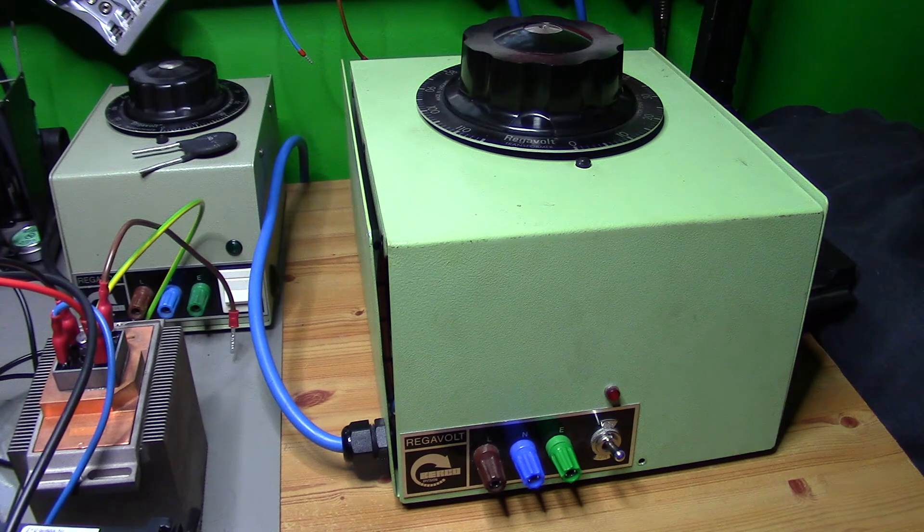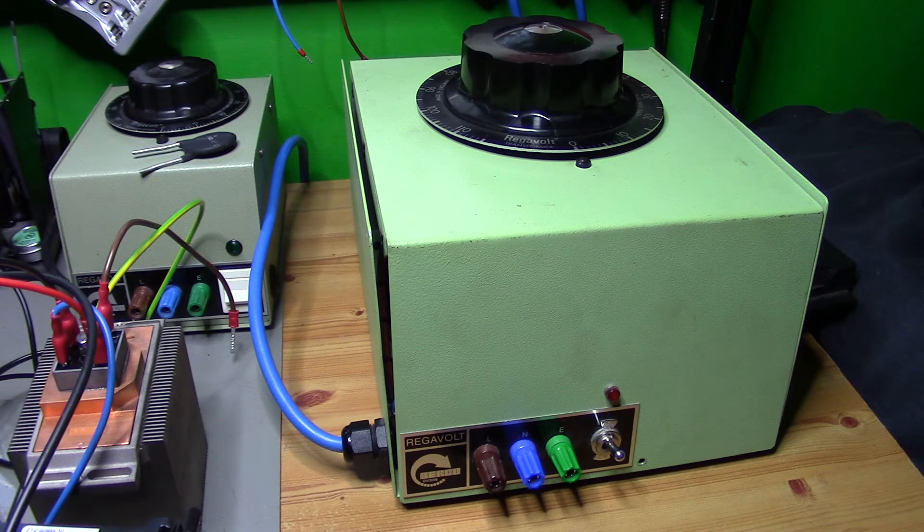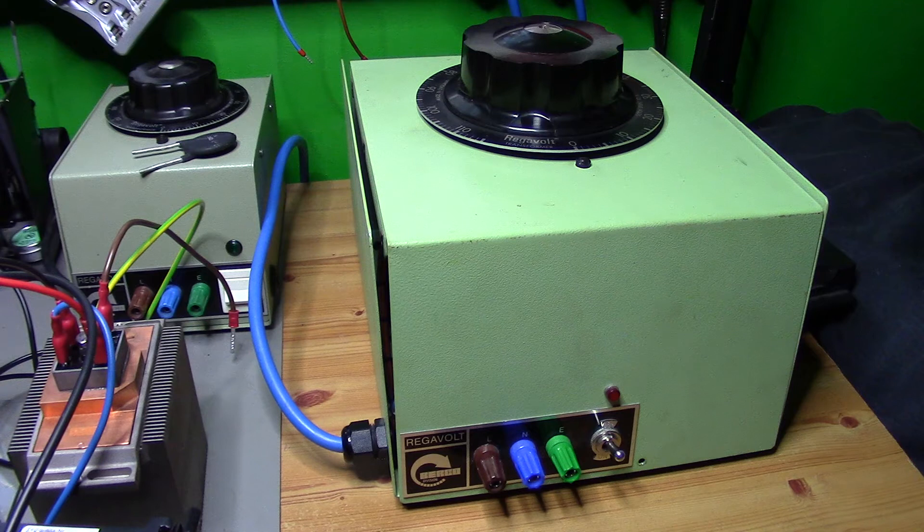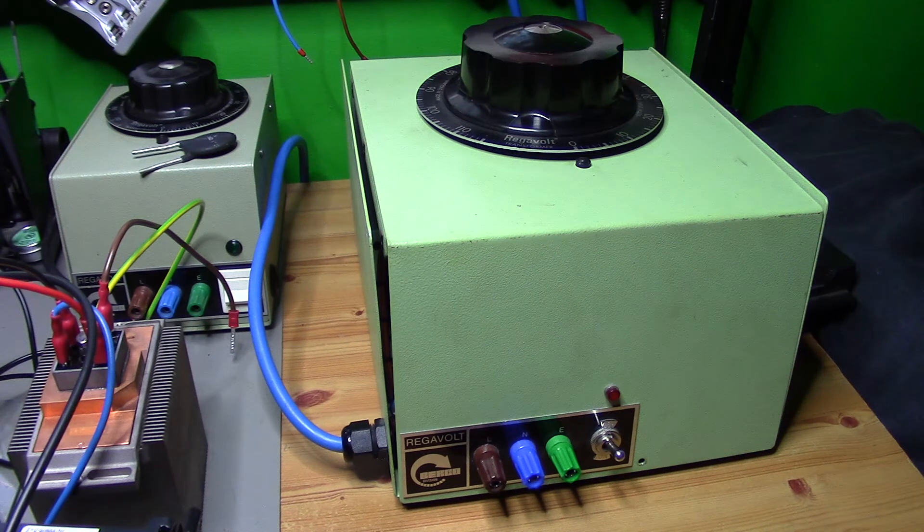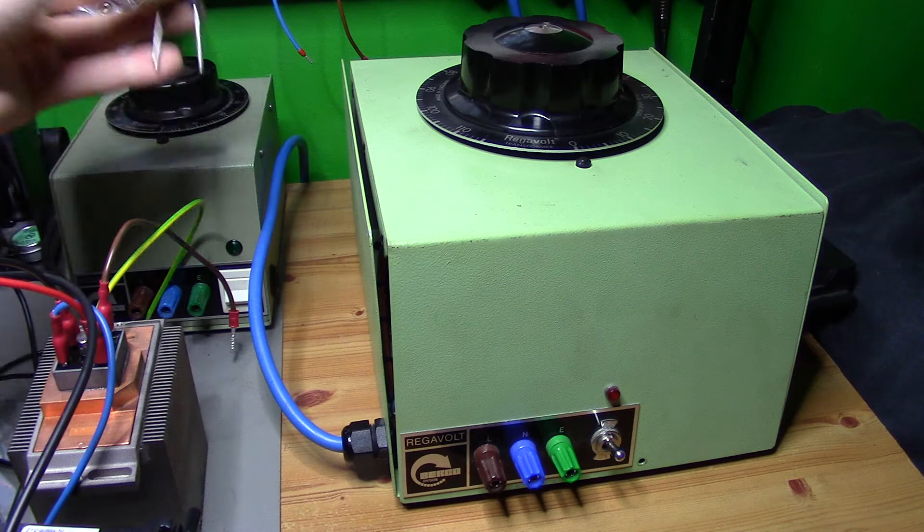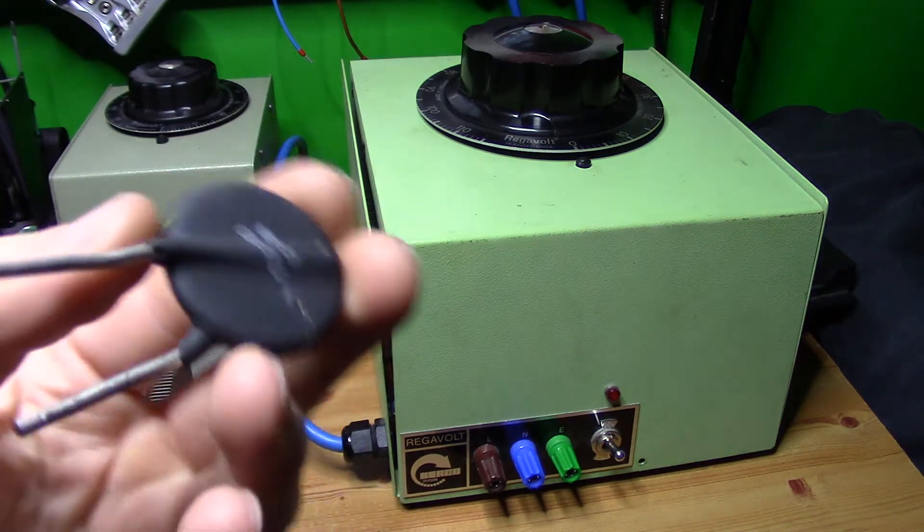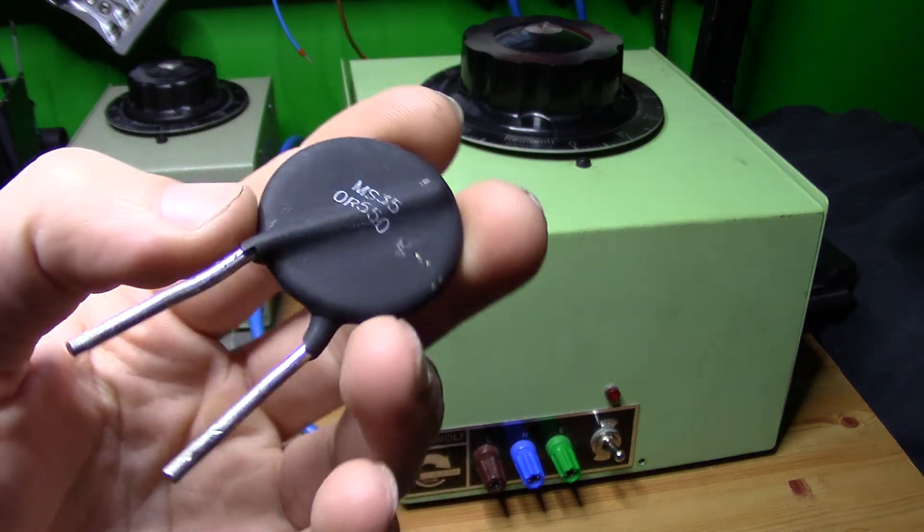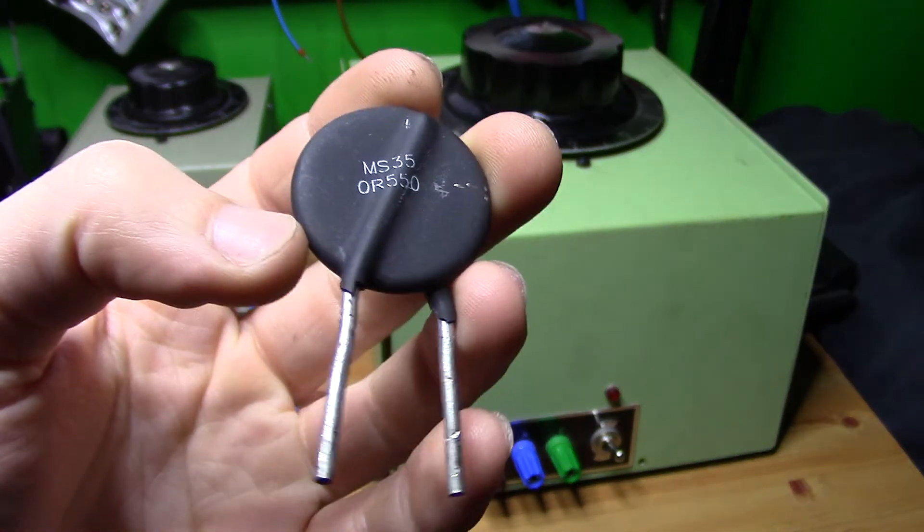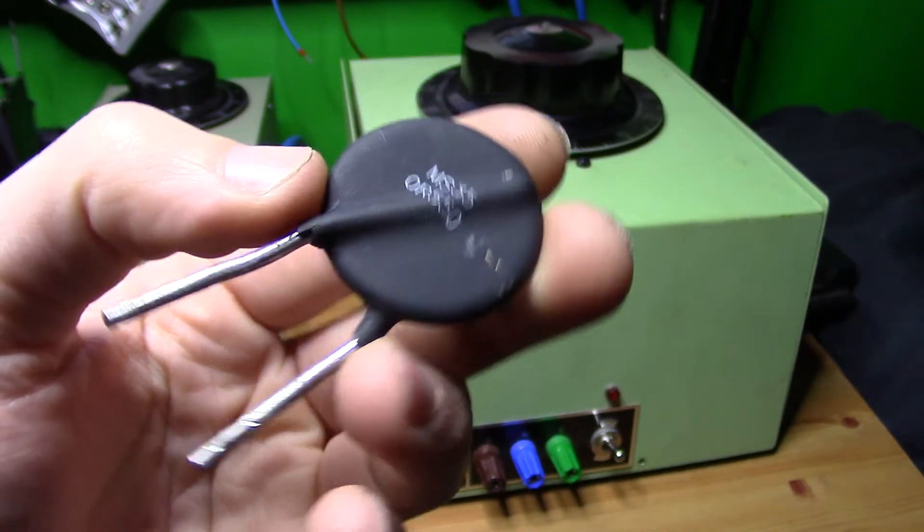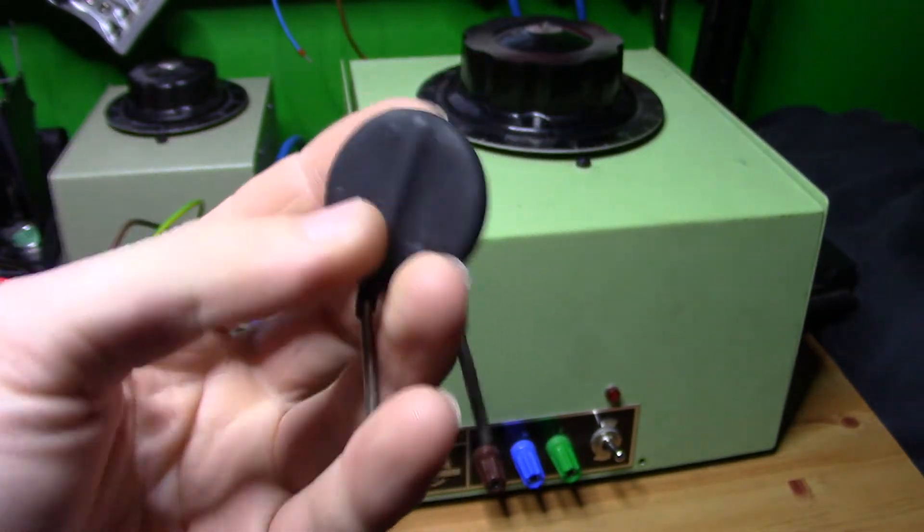So what I've done, I've modified this variac to actually have a soft start and there's several ways you can do this. There's this way where I've got this device over here, this is what's known as an NTC thermistor. So when it's cold the resistance is high, when it's hot the resistance is low, so it's a negative temperature coefficient thermistor.